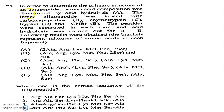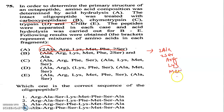Another problem: in order to determine the primary structure of an octapeptide, amino acid composition was determined by acid hydrolysis. The intact oligopeptide was then treated with carboxypeptidase B, chymotrypsin C, trypsin D, and CNBr E. The amino acid composition includes two alanines, two serines, one arginine, one lysine, one methionine, and one phenylalanine — eight amino acids total, confirming it is an octapeptide.